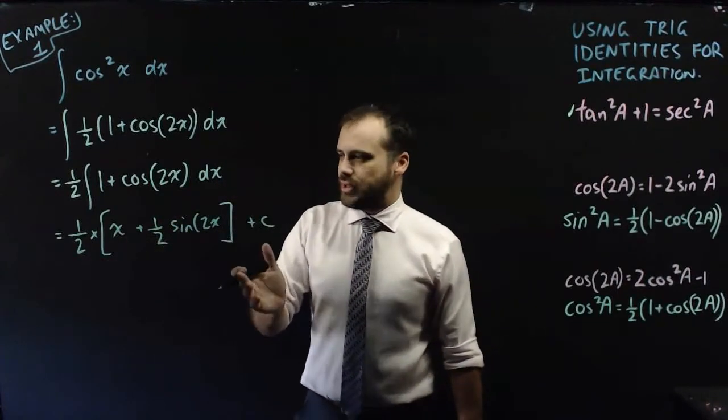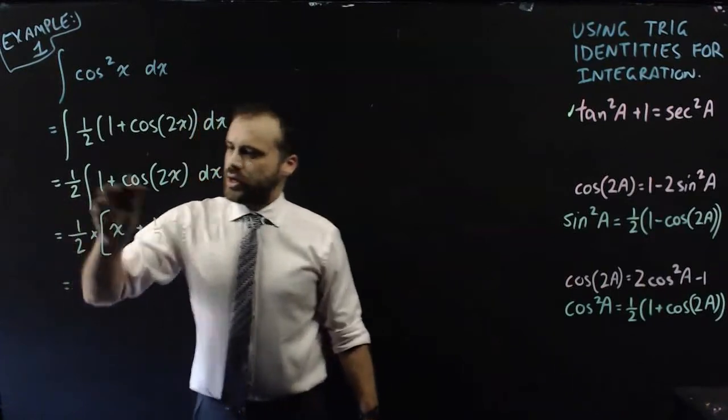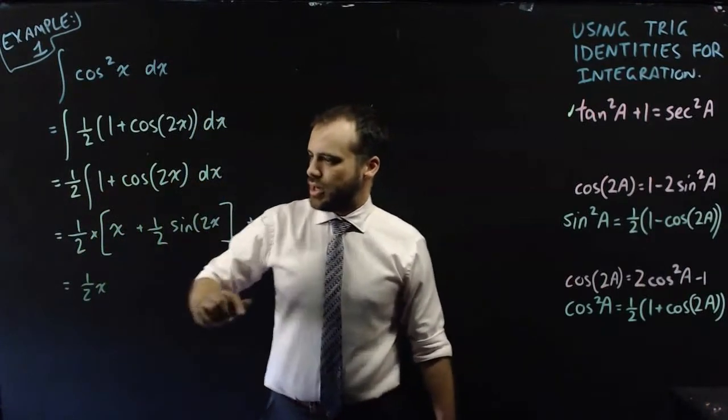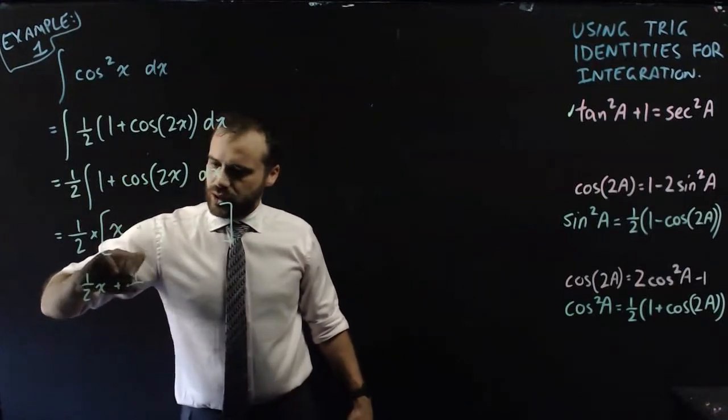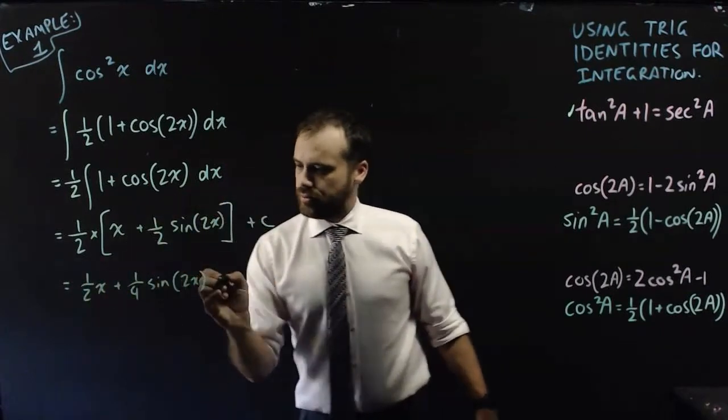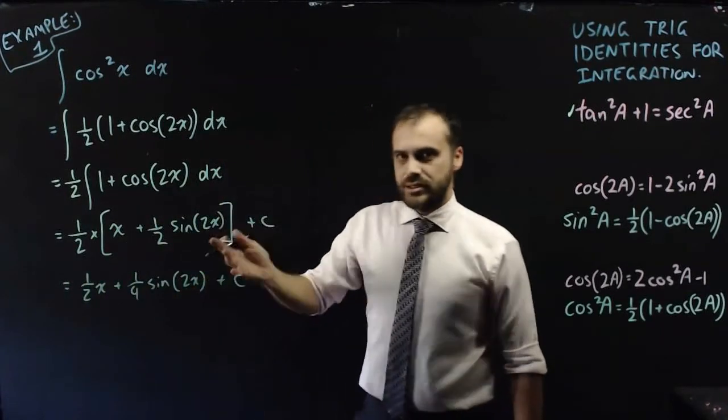Now, probably don't want to leave it like that. I can expand it: one half times x is half x, half times a half is a quarter, plus one quarter sine(2x) plus C. Done.